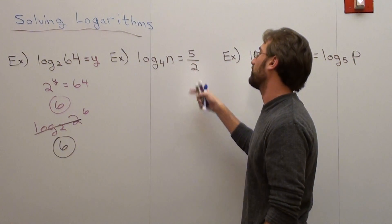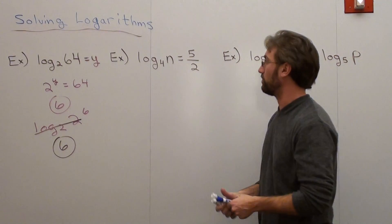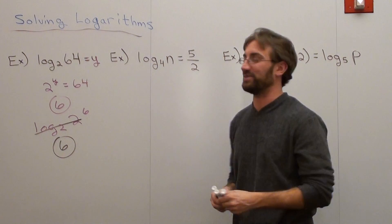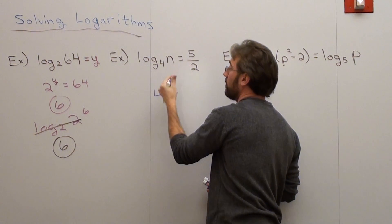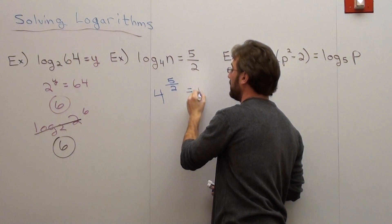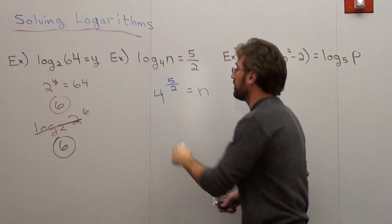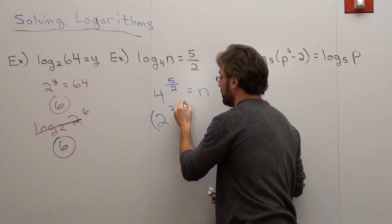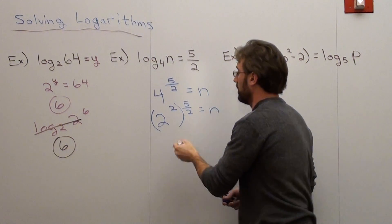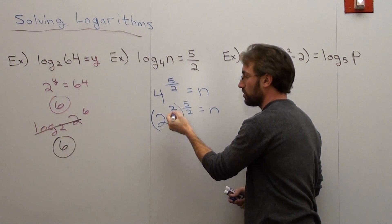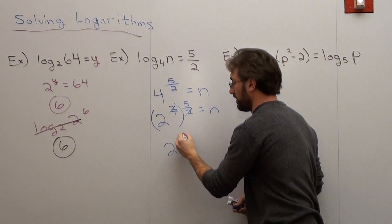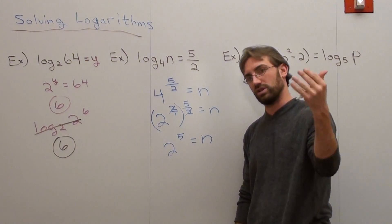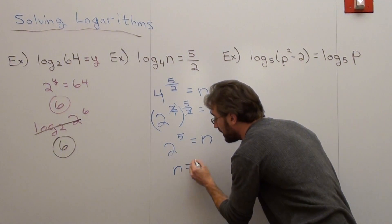Next one: log base 4 of n equals 5 halves. In this case, I would just write it in exponential form — that's the easiest way. So it's 4 to the power of 5 halves equals n. Now, here's a cool trick: 4 is the same thing as 2 squared, to the power of 5 halves. 2 squared times 5 halves equals 2 to the 5th equals n. 2 to the 5th is 2 times 2 times 2 times 2 times 2, which is 32.